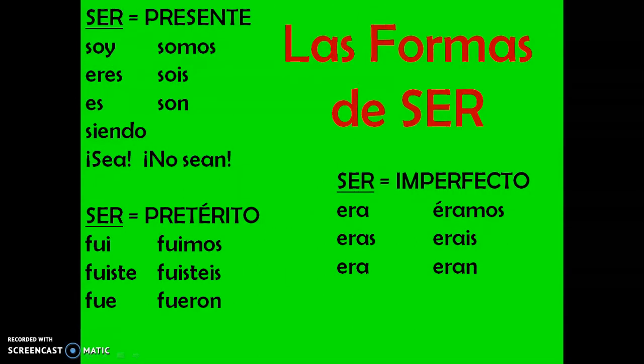Now we have to make sure we know how to conjugate the verb ser. The three most common verb tenses you probably know are the present, the preterite, and the imperfect. Let's take a quick review of ser in all these verb tenses. Conjugate ser with me in the present, including the participle and commands. Ser — to be.